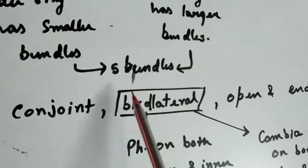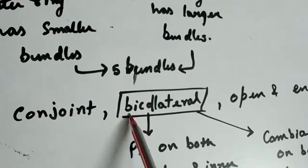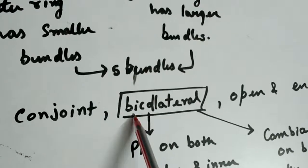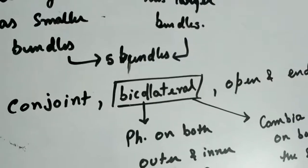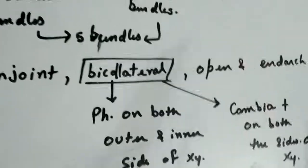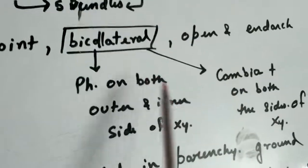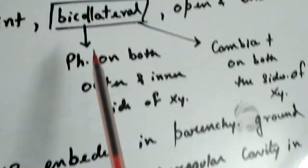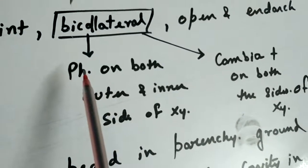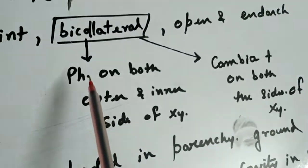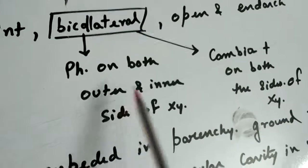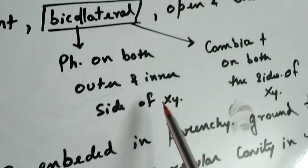Vascular bundle is conjoint bi-collateral. This term is very important, and in the diagram I will define this word very clearly. So bi-collateral defines the presence of phloem on both outer as well as inner side of xylem.